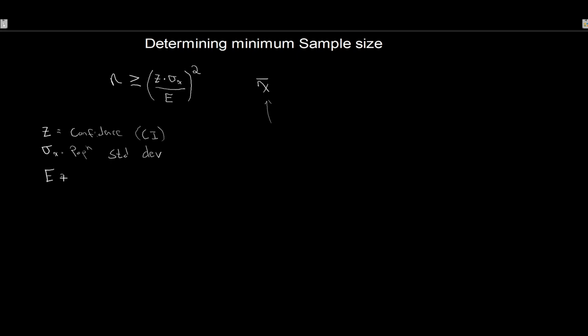Sampling error was x̄ minus μ — how far my estimate falls from the true population. So E represents the largest amount I'm willing to have x̄ deviate. Let's jump into an example to see how we use this. We want to look at the amount of time that corporate executives watch television.